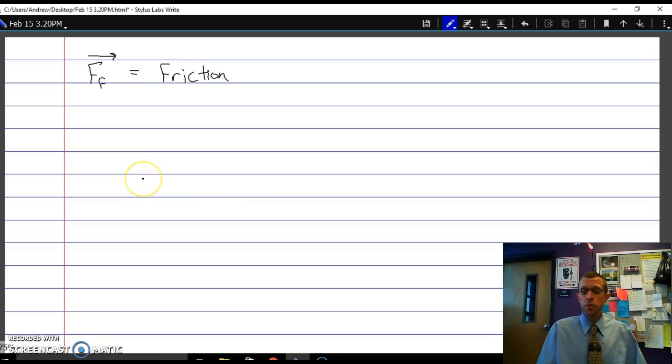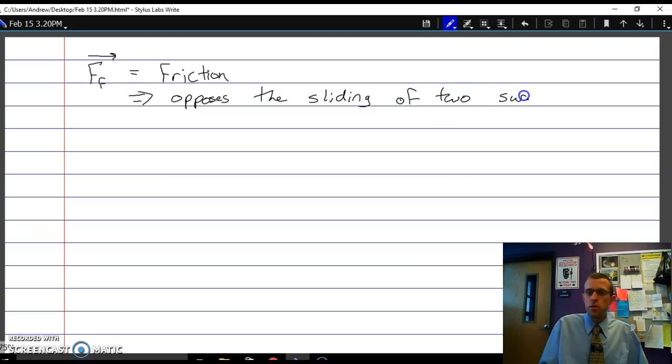And we'll get into a little bit more detail with friction later on. So for now, what we need to know here is that the direction on this is always going to be in a direction that opposes the sliding of two surfaces past one another.